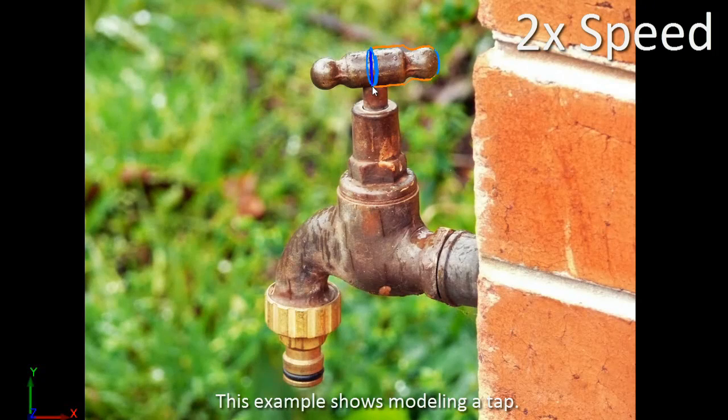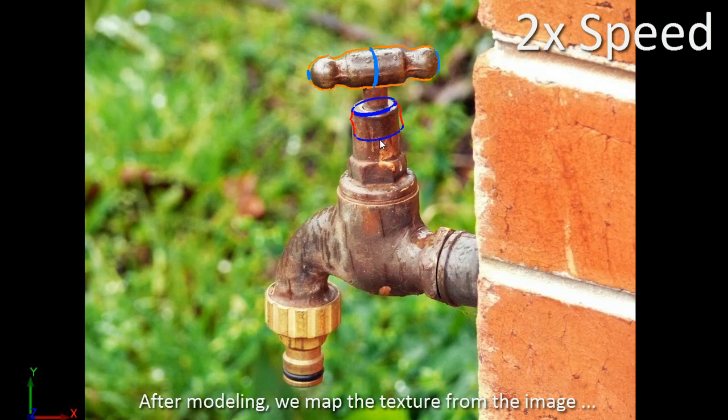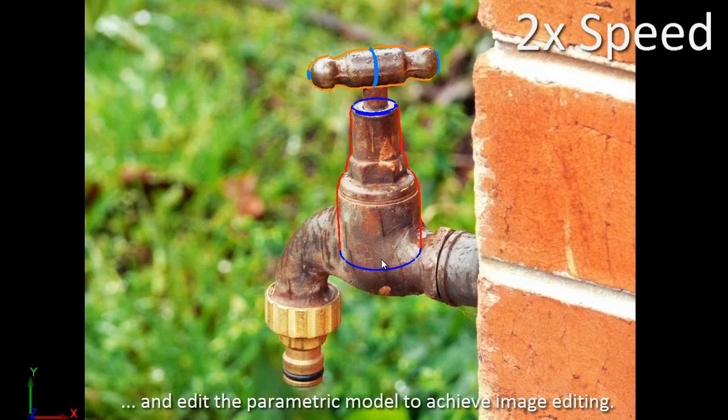This example shows modeling a tap. After modeling, we map the texture from the image and edit the parametric model to achieve image editing.